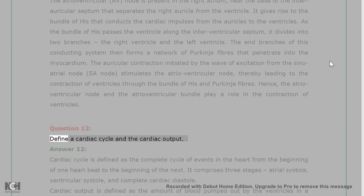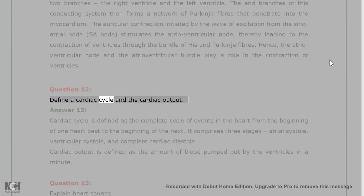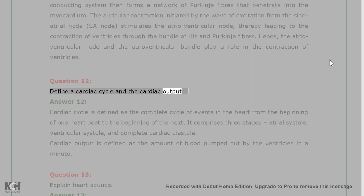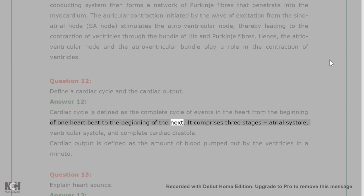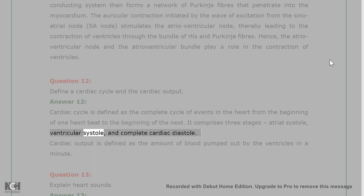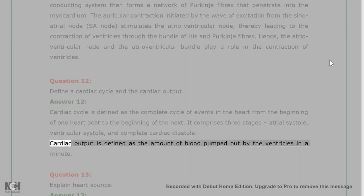Question 12: Define a cardiac cycle and cardiac output. Answer 12: The cardiac cycle is defined as the complete cycle of events in the heart from the beginning of one heartbeat to the beginning of the next. It comprises three stages: atrial systole, ventricular systole, and complete cardiac diastole. Cardiac output is defined as the amount of blood pumped out by the ventricles in a minute.